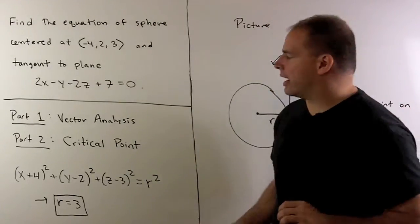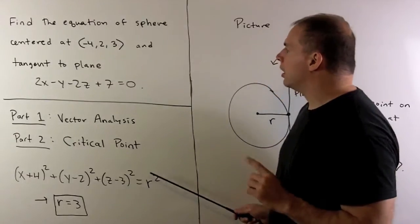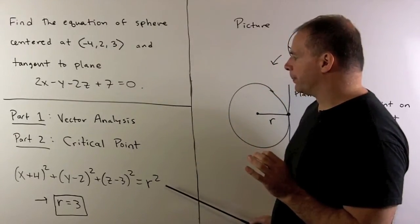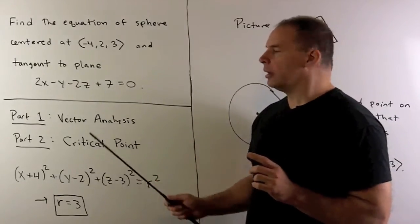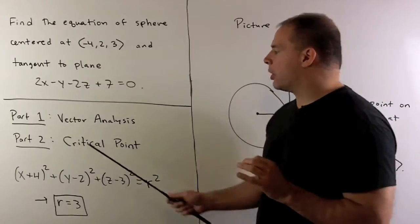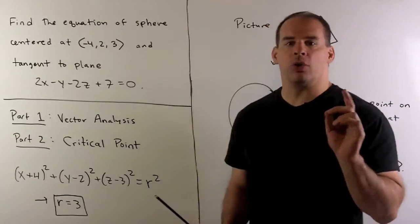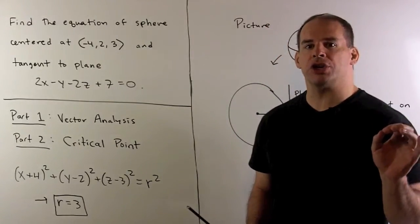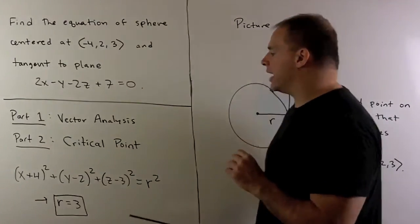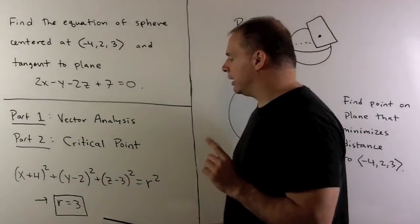We start by writing down the equation of a sphere. We're given the center, so we need to find the radius. In part one, we use vector analysis to find the radius. In part two, I found a critical point for the distance function using partial derivatives. In both cases, we found the radius to be equal to 3.